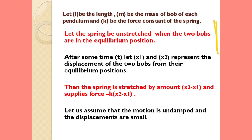The two pendulums have the following specifications: L is the length of the pendulum, M is the mass of the pendulum, and K is the force constant of the spring. Both pendulums are identical having equal length and equal mass, with one spring between them. Let the spring be unstretched when the two bobs are in the equilibrium position.